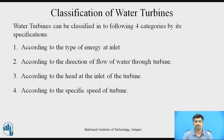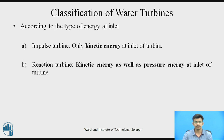Now we will see the classification of water turbines. Water turbines can be classified into four categories: according to the type of energy at inlet, according to the direction of flow of water through the turbine, according to the head at the inlet, and according to specific speed. According to the type of energy at the inlet, turbines are classified into two subtypes: impulse turbines, in which only kinetic energy is applied at the inlet, and reaction turbines, in which both kinetic energy and pressure energy are applied at the inlet.